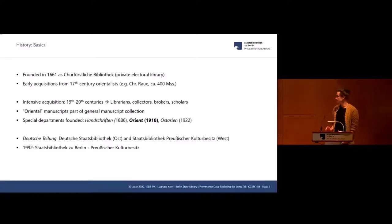German partition always relevant for the State Library because after the Second World War we had two institutions, one in the east and one in the west. This also has influence on the shelf marks and it's important to know when we look at the provenance data. But in 1992 the two institutions were reunified as Staatsbibliothek zu Berlin in Preußischer Kulturbesitz.